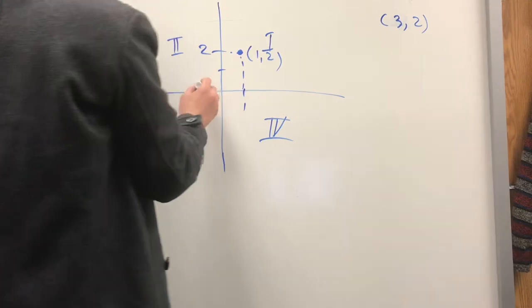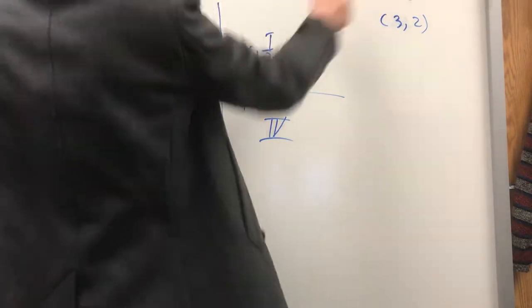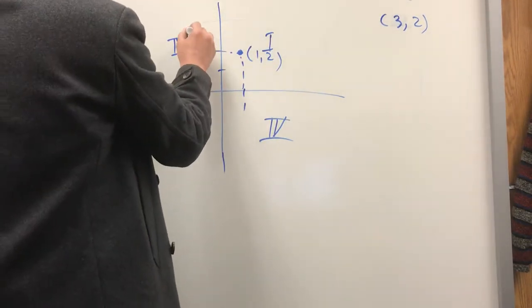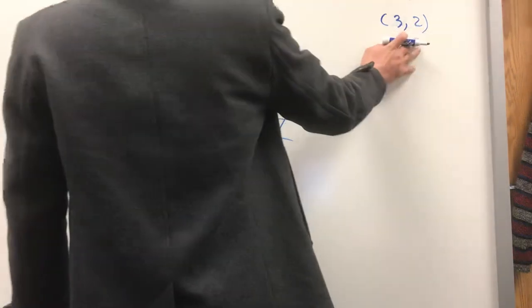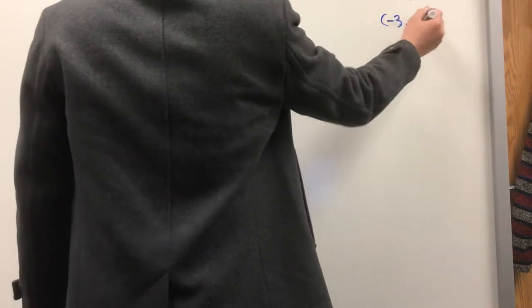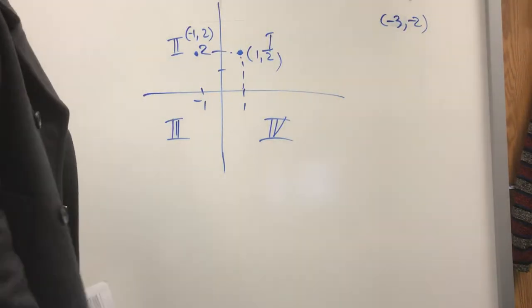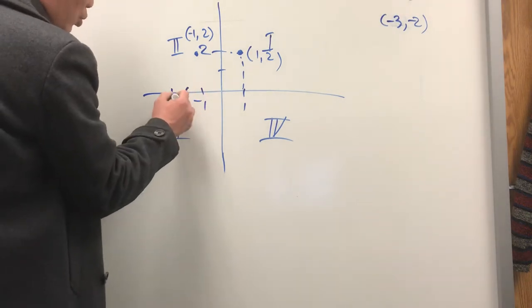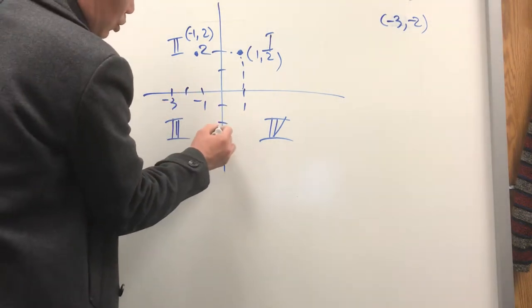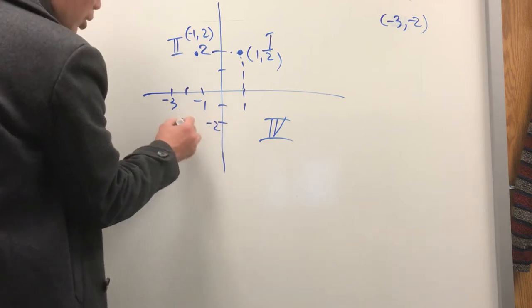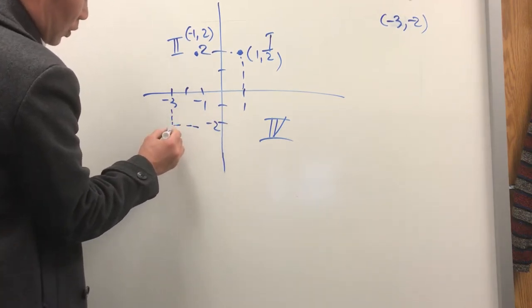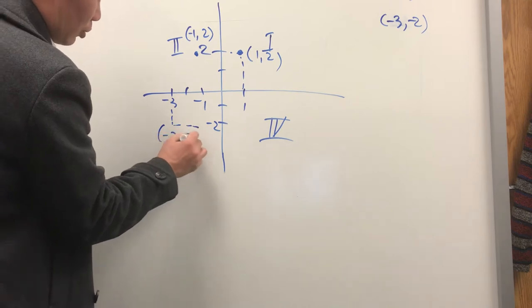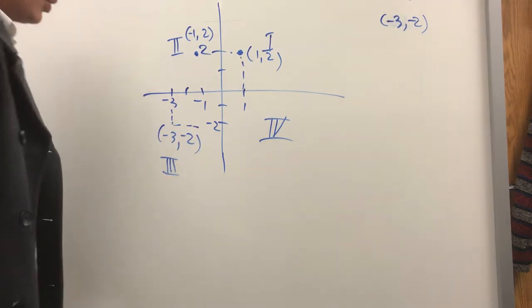For the point (-1, 2): negative 1 on the x-axis, 2 on the y-axis — so it's in the second quadrant. And if I change it to (-3, -2): negative 3 here, negative 2 here — that point is in the third quadrant.